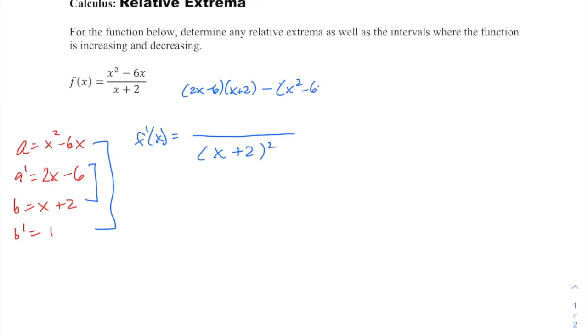Just remember you are subtracting that entire result, so you're going to have to distribute that negative. And so here we'll have a little foil. It's 2x squared plus 4x minus 6x will give us minus 2x in the middle minus 12. And then distributing that negative minus x squared plus 6x.